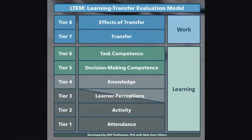I wanted to create a new model. I started with a 12-level model, then a 14-level model, then a 15-level model. I asked for feedback and people said, 'Too much, too much.' So I narrowed it down to eight tiers. I called them tiers to distinguish it from the Kirkpatrick model.